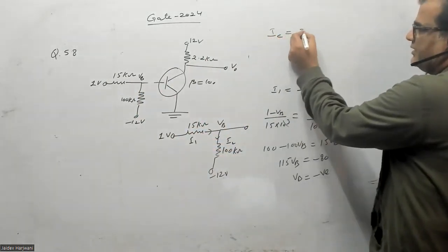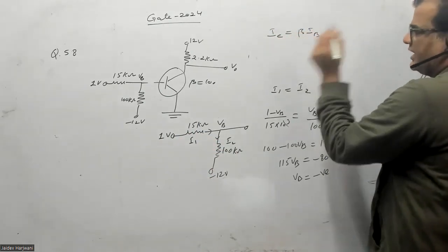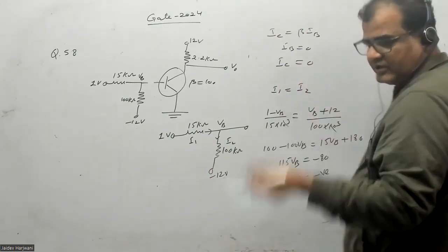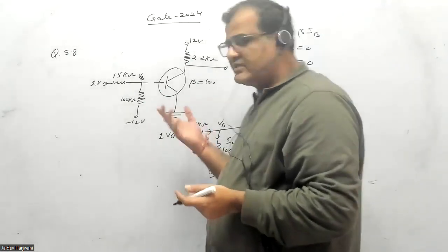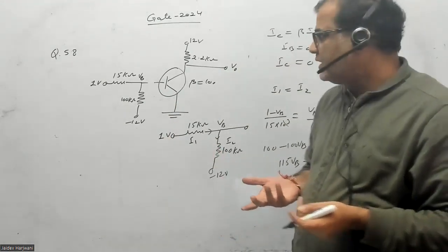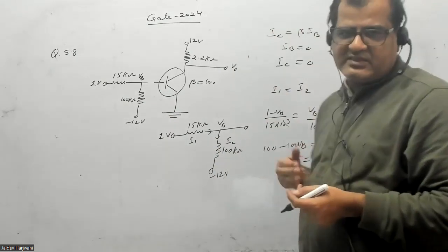And IC is what? IC is your beta IB. So when IB is zero, IC itself becomes zero. Why? Because reverse saturation current is not given in the question, that is also zero.